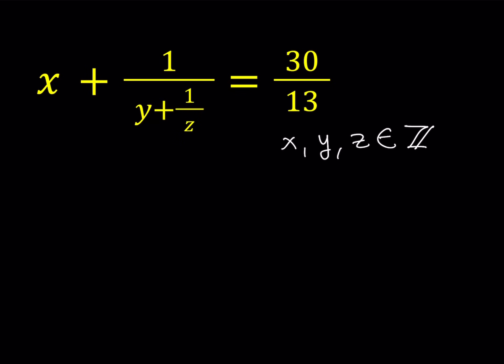I'd like to take 30 over 13 and break it down. Now notice that on the left hand side we have x plus 1 over something, so we have an integer plus 1 over something. Obviously 1 over something is going to be like a fraction. y plus 1 over z is also an integer plus a fraction, like for example 5 plus 1 third or something like that. So we kind of need to break down our number on the right hand side. That's my first idea.